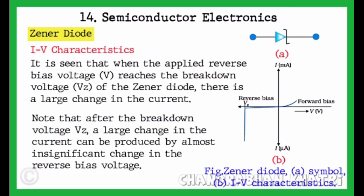I-V characteristics. It is seen that when the applied reverse bias voltage (V) reaches the breakdown voltage VZ of the Zener Diode, there is a large change in the current.